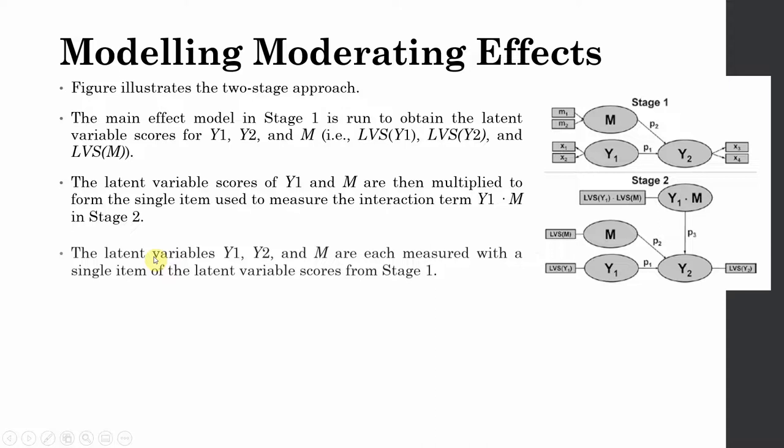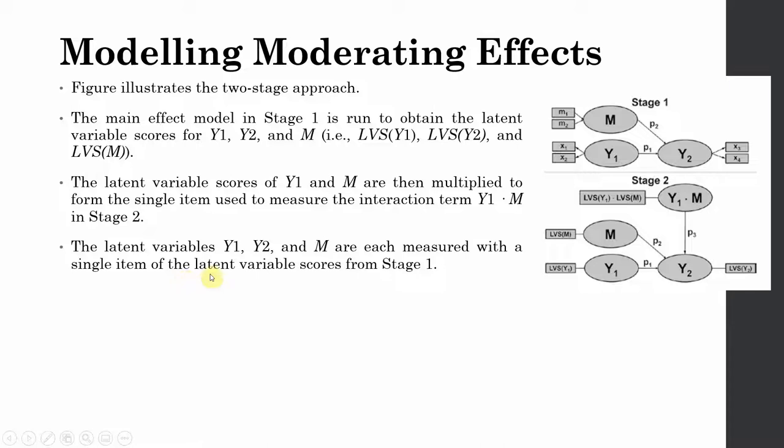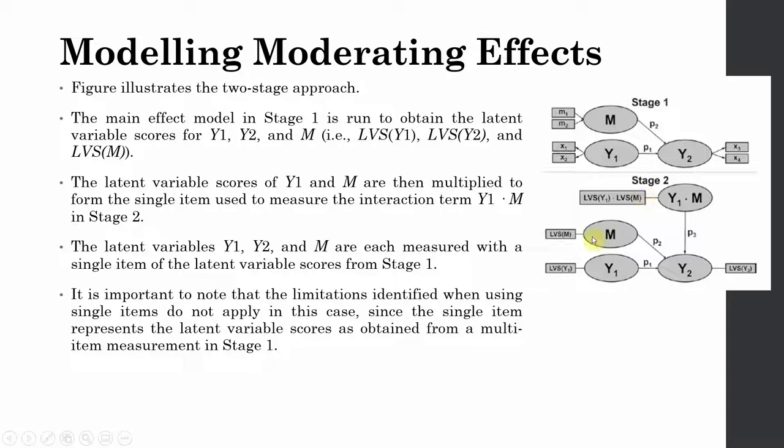The latent variables Y1, Y2, and M are each measured with a single item using the latent variable scores from stage 1. In stage 2, all constructs are measured using these single items — the latent variable scores obtained from stage 1. It is important to note that the limitations identified for single-item scales do not apply here because these latent variable scores were derived from multiple items in stage 1.